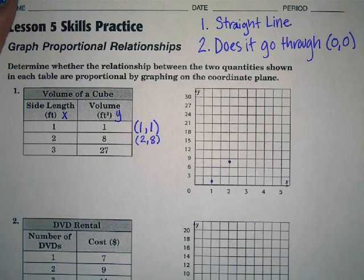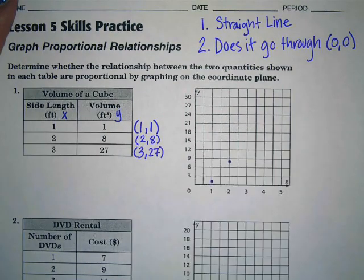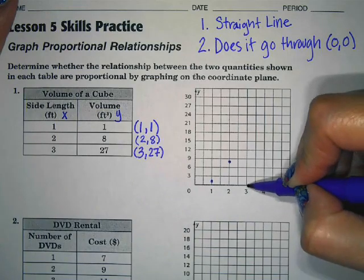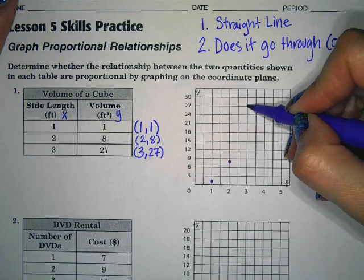And then the last point we have is three twenty seven. Okay so x is three, y is twenty seven. So I'm going to go all the way up to twenty seven.